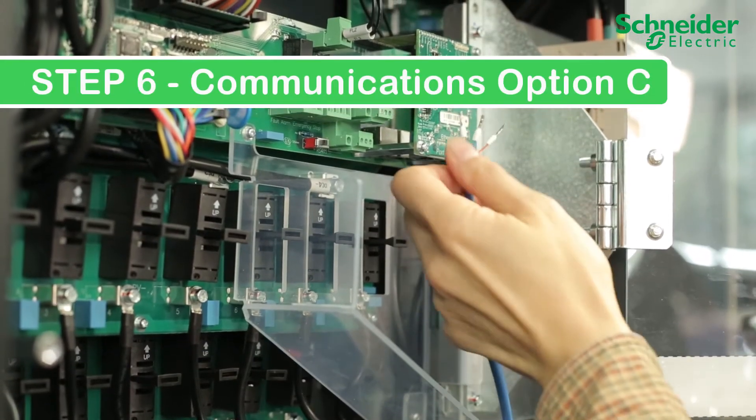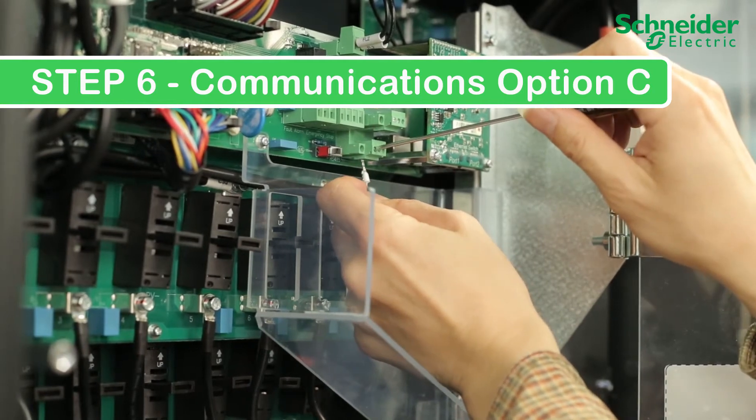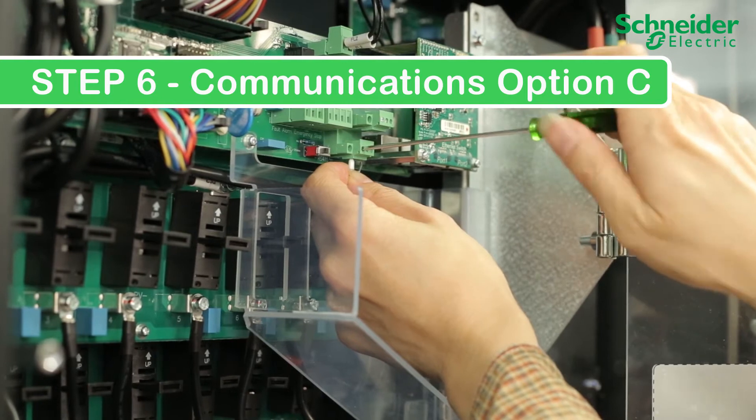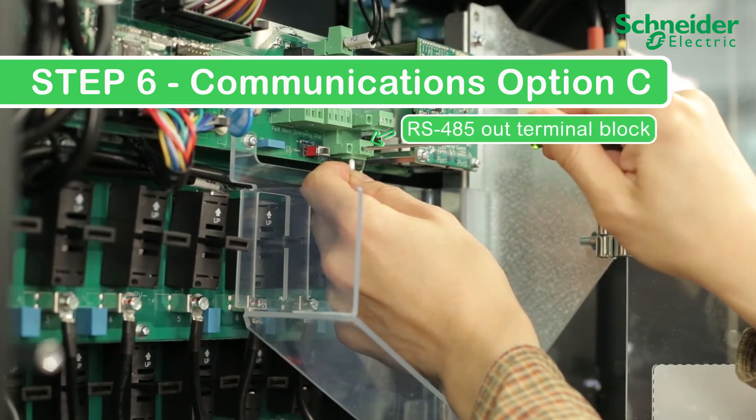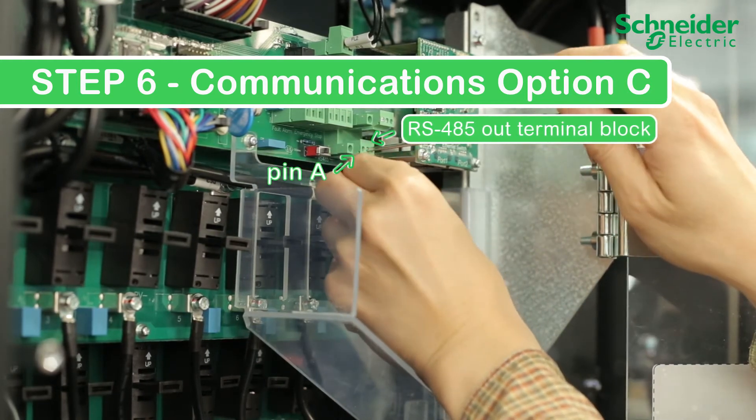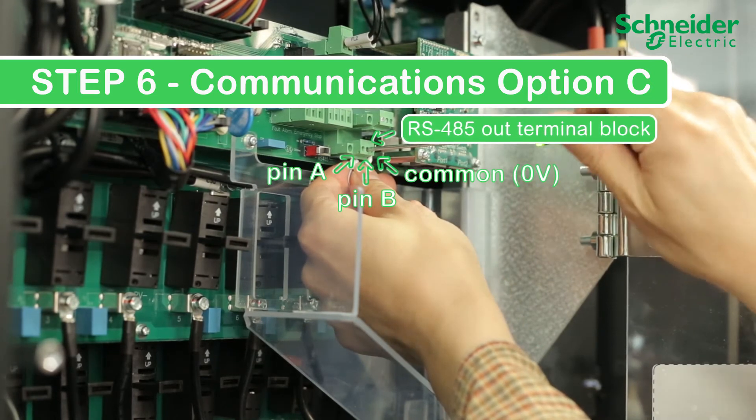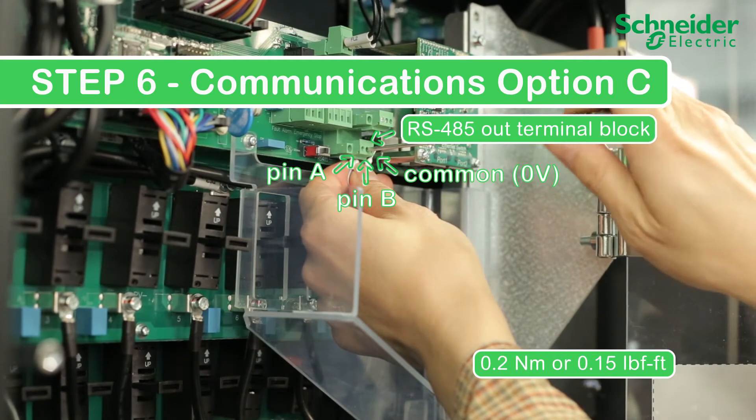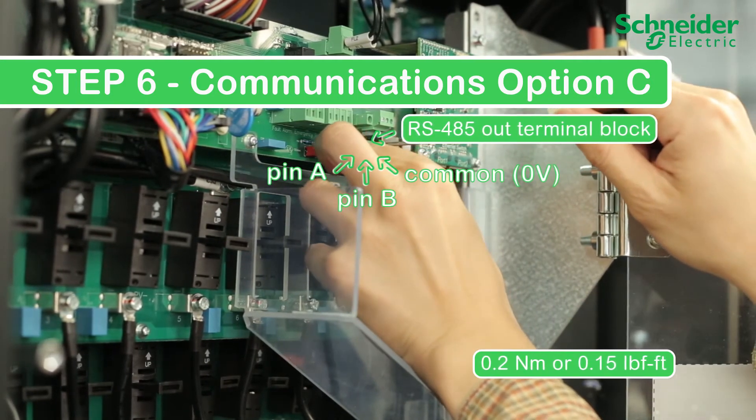Step 6: Communications option C. Make your RS485 connection using bus terminal block connectors. Connect the 3-wire cable to the lower terminal block, the out terminal block, in the following sequence: Receive positive to A, transmit negative to pin B, and common to 0V. Torque the terminals to 0.2 Nm or 0.15 lb-ft. And if more than 14 units are in the RS485 daisy chain, set the terminator to on.